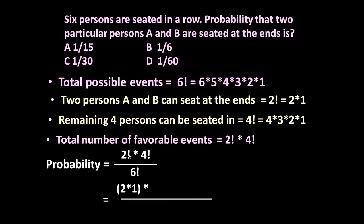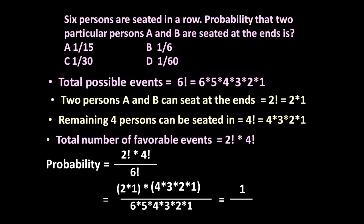Expanding further: factorial 2 is 2 × 1, factorial 4 is 4 × 3 × 2 × 1, divided by factorial 6 which is 6 × 5 × 4 × 3 × 2 × 1. After cancellation, this is equal to 1/15. So the answer is A: 1/15.